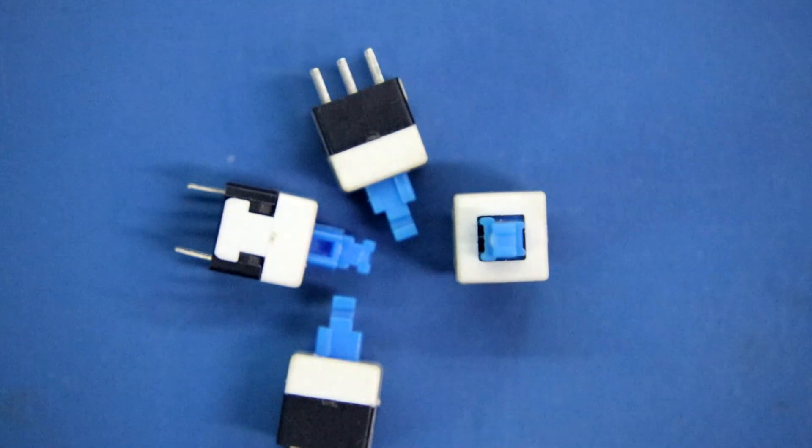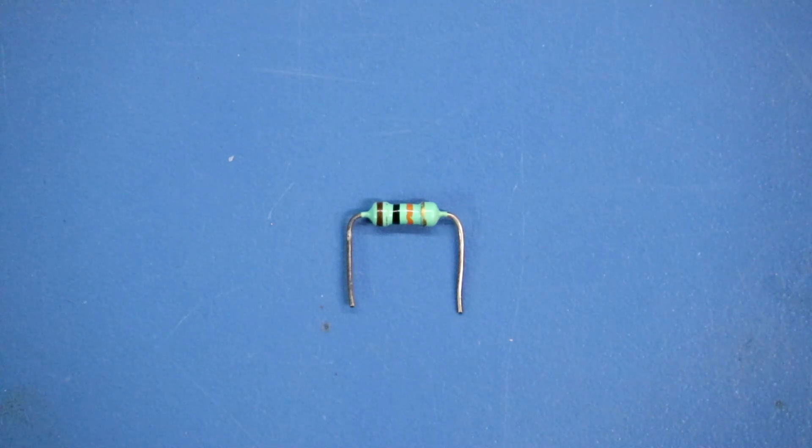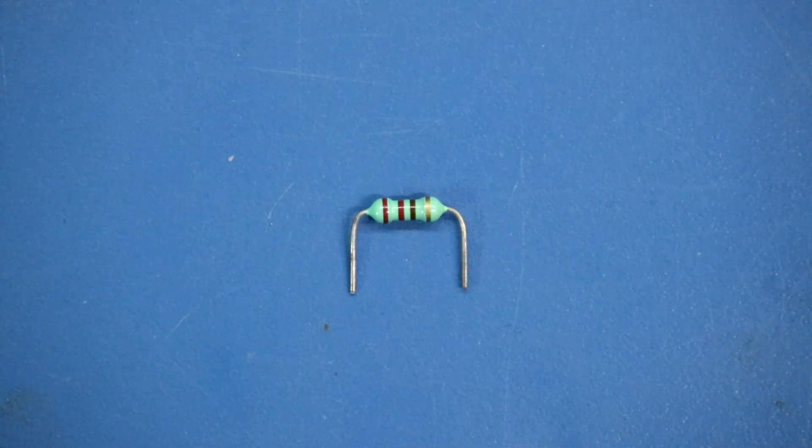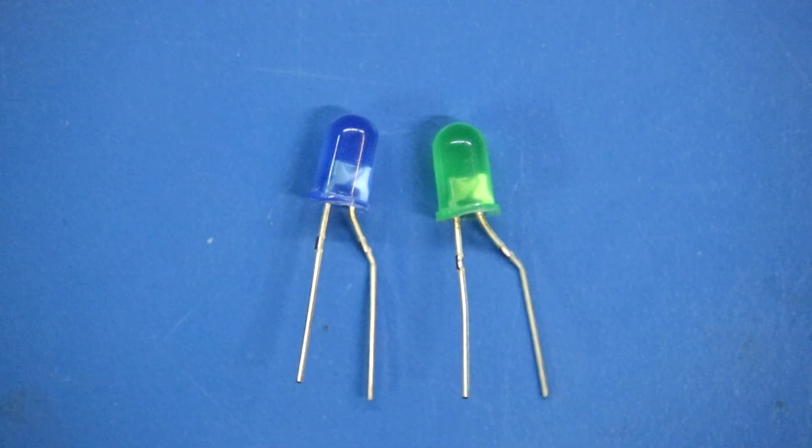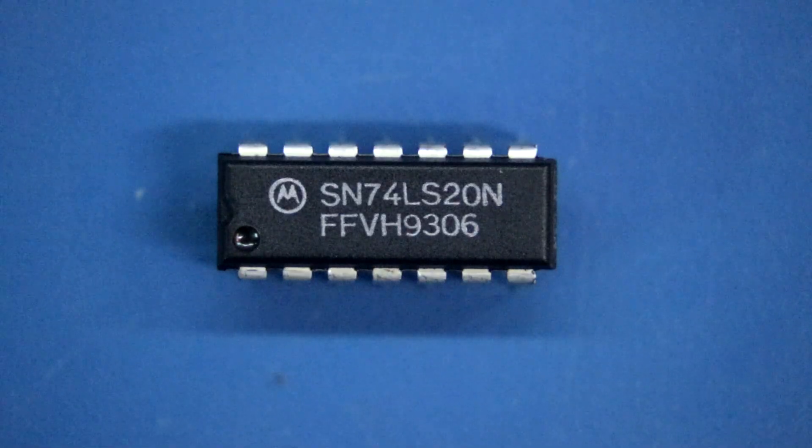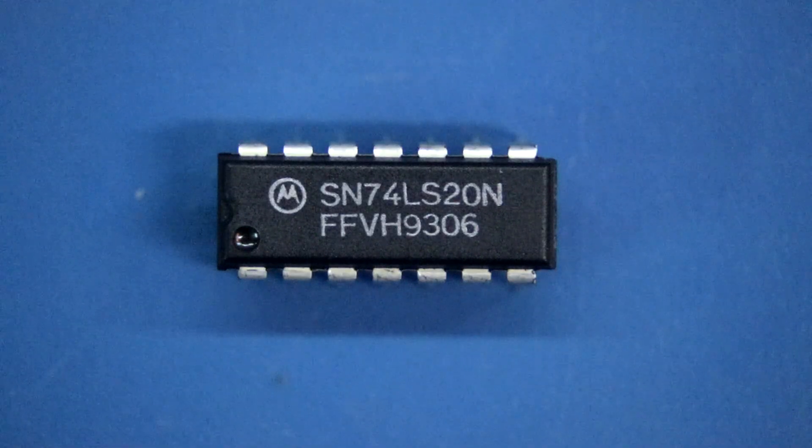I will use this kind of switch, 10K resistor, 220 ohms resistor, blue and green LED, and this is the IC 7420.